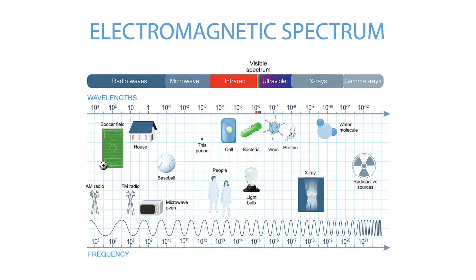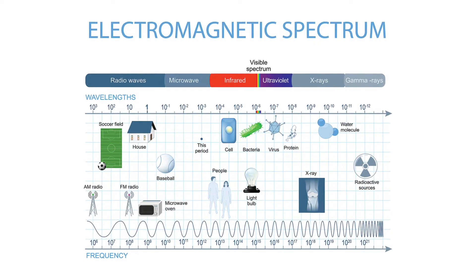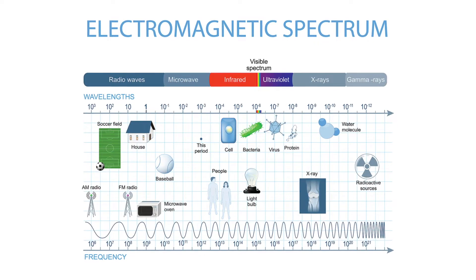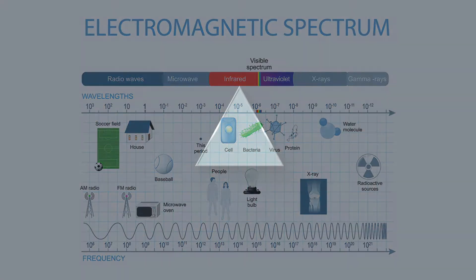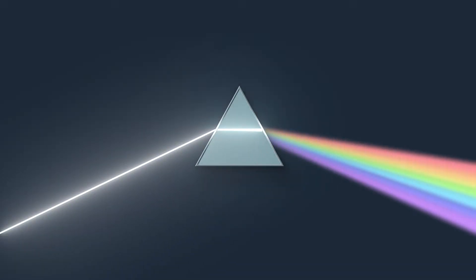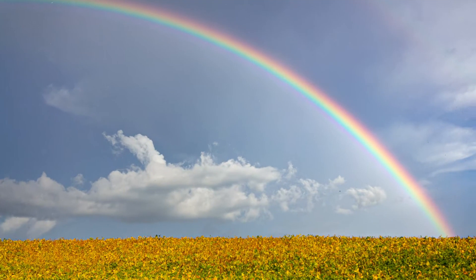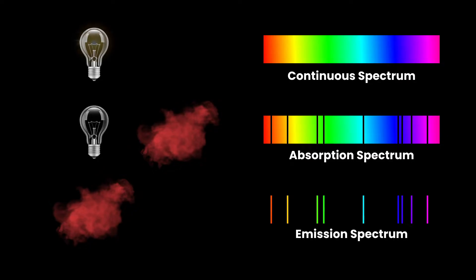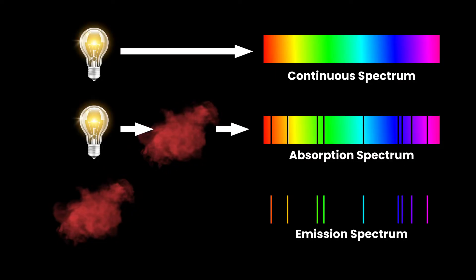Each star has its own unique pattern of wavelengths that provides clues about its temperature, density, and composition. When sunlight is passed through a prism, it separates white light into its component wavelengths, also known as a rainbow. A spectrometer operates in a similar way by separating any given light source into its component wavelengths.